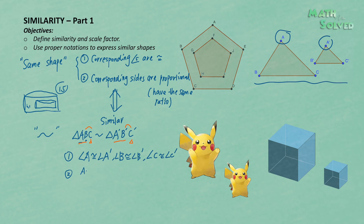So the ratio AB over A prime B prime equals the ratio BC over B prime C prime, which equals the ratio AC over A prime C prime. Let's assume this common ratio equals two.